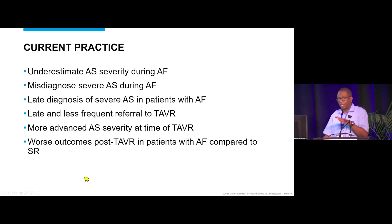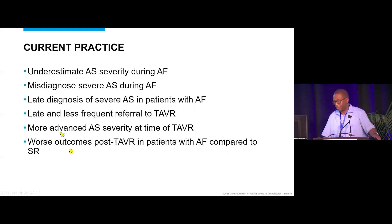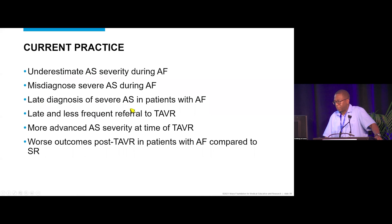This is current best practice — yet we are underestimating aortic stenosis severity during atrial fibrillation. We misdiagnose severe AS as moderate or moderate-severe, leading to late diagnosis of severe aortic stenosis in patients with AFib, which leads to late and less frequent referral to TAVR or SAVR.